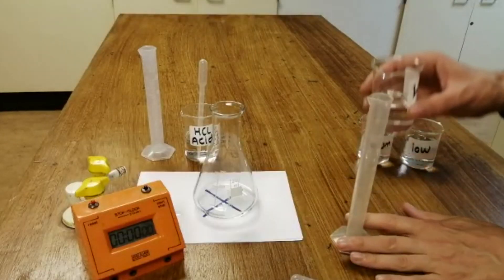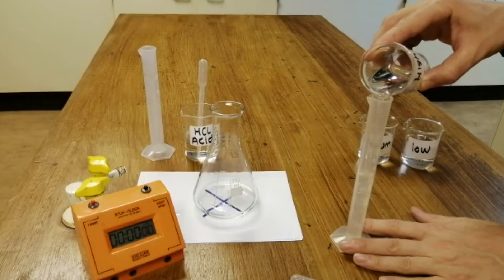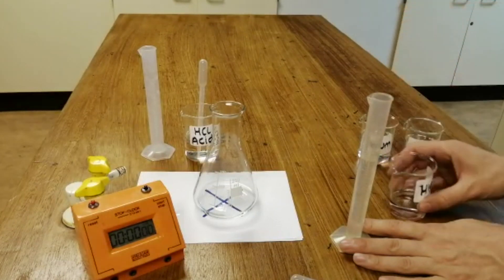And I will add exactly 25 centimetres cubed of the sodium thiosulfate each time.